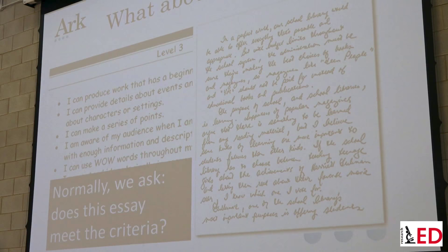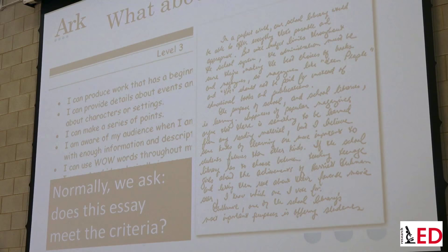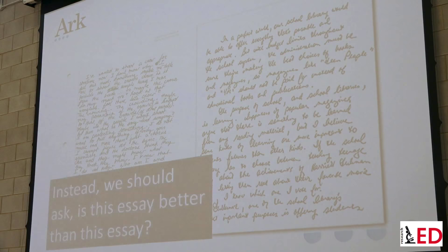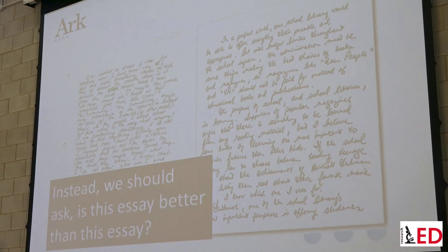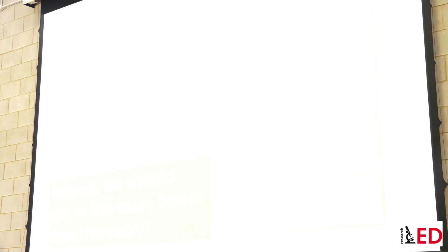A tick-box approach lets a formulaic essay get a good grade even when it's not actually good, while a fantastic but unconventional essay may not tick all the boxes. So instead of asking 'does this essay meet the criteria?' we should ask 'is this essay better than the other essay?' If you do that enough times - with some nice software I'll mention shortly - you can get a very reliable set of grades. I want to show the research underpinning why it's hard to mark against criteria: human judgment is comparative and relative, not absolute.